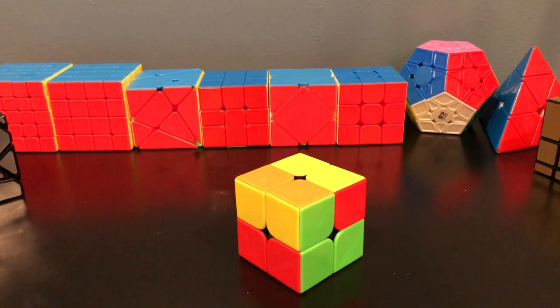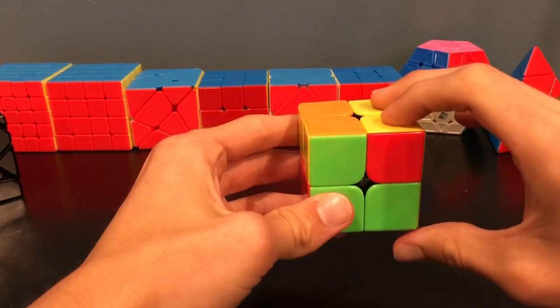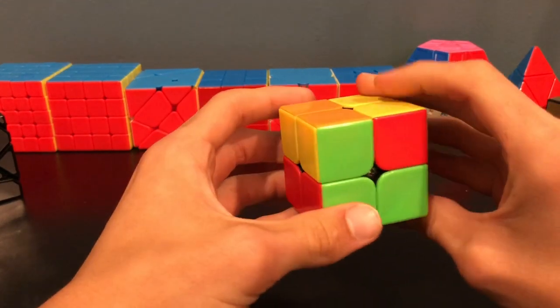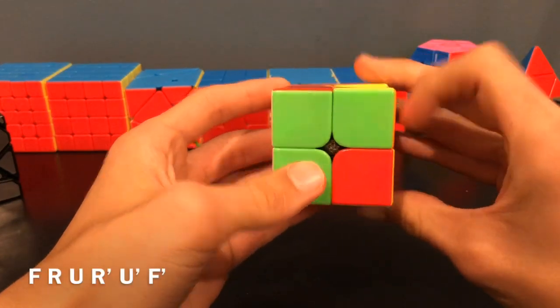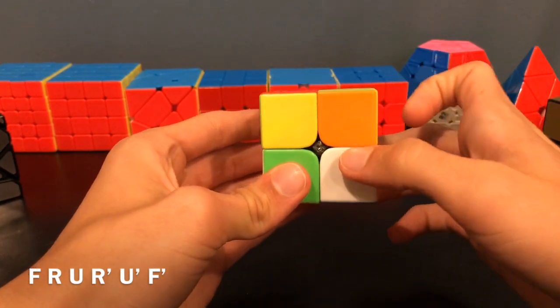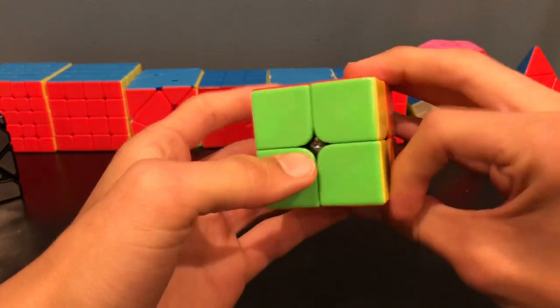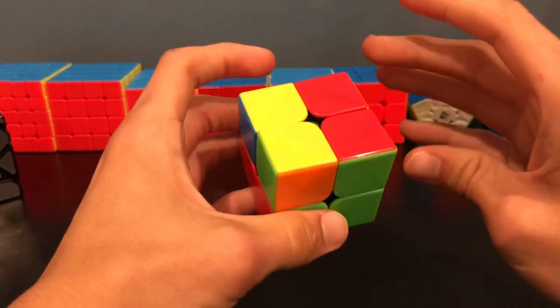The next two I'm going to show you are also very similar. So, this one, where you have two here, and two facing up, is very easy. So, you'll do F, then you'll do R, U, R prime, U prime, F prime. So, you'll see all we did was this, that.